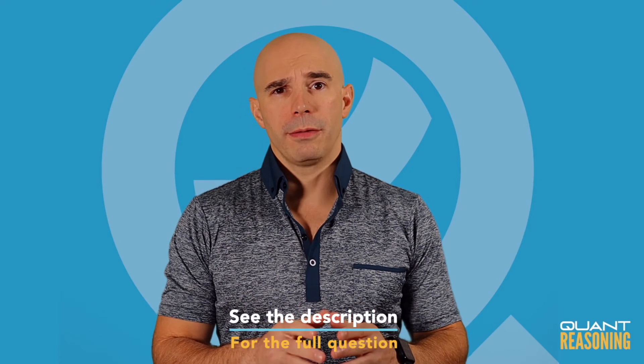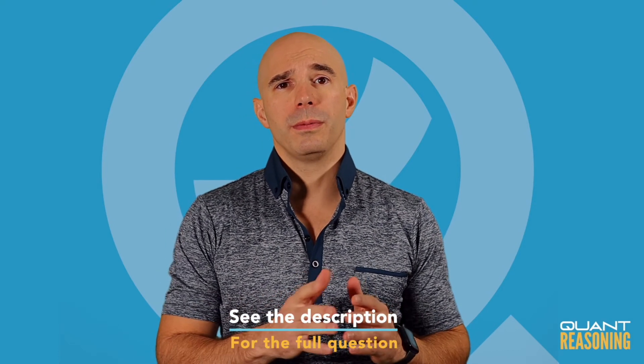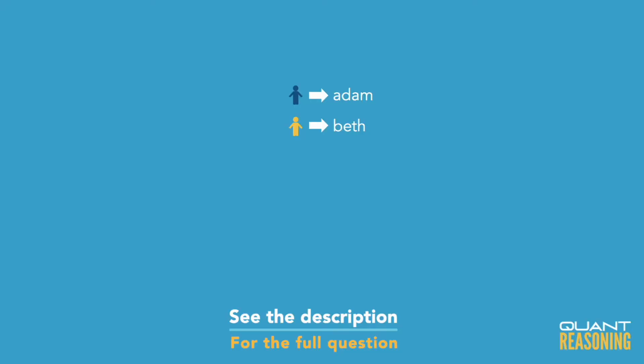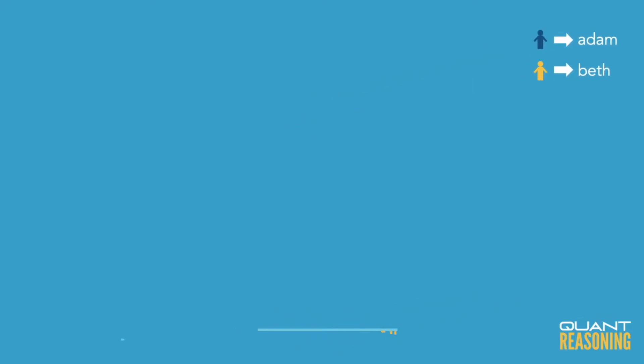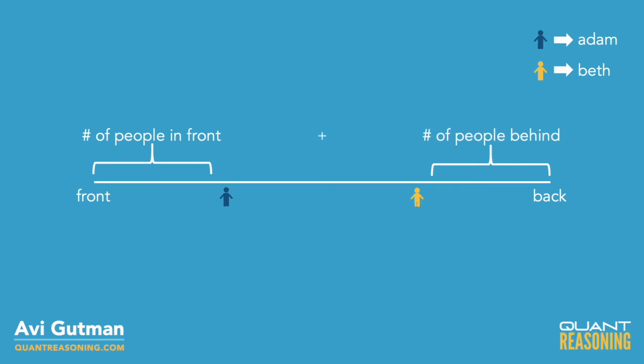This is the kind of question where visualizing can really be useful. We've got Adam and Beth somewhere in the line. Adam is ahead of Beth, and there is an unknown number of people in between them. We know that the people ahead of Adam plus the people behind Beth totals 18. We want to know how many of those 18 are behind Beth. If we knew how many are in front of Adam, we could infer how many are behind Beth, because together that's 18.